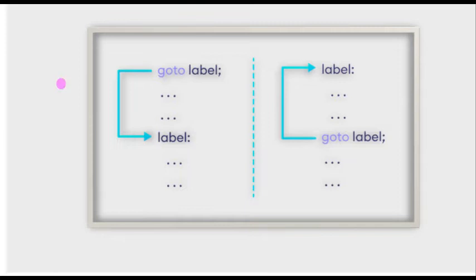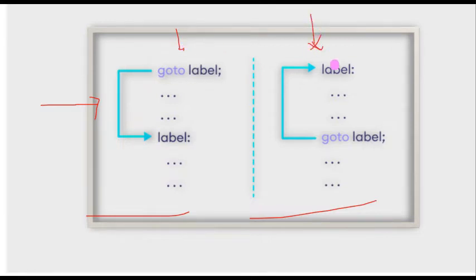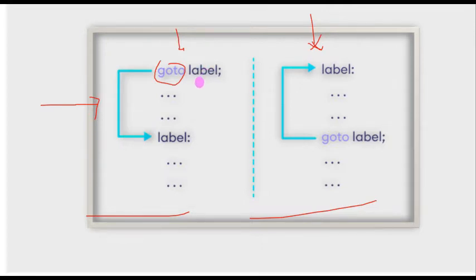The go-to statement — the general syntax or format of the go-to statement can be written in either of two forms. The 'goto' is a keyword that cannot be changed, but the 'label' is the name of the identifier. This identifier is a valid identifier followed by a colon, and this identifier and this label must match or be the same.